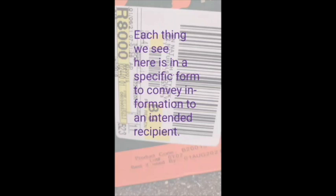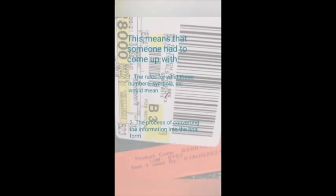And everything you see on this box, the numbers, the letters, the symbols, is intended to convey some piece of information to an intended recipient. It might be to a person, it might be to a machine like a scanner or an inventory tracker. This means that someone had to come up with the rules for what these symbols would mean. And those rules are what the symbols mean. It's called a code.